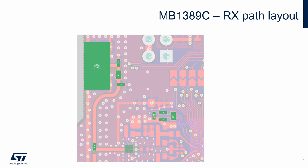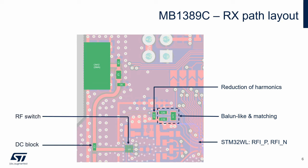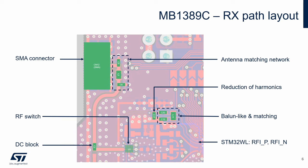The PCB layout of the receiver path looks like this. We can see the differential inputs of the receiver and differential transmission line, balun-like and matching network, the capacitor which can attenuate coupled harmonics from the transmitter part, RF switch, DC block, antenna matching network, and the SMA connector. The impedance of the single-ended RF line is 50 Ohms, and the impedance of the differential RF line is 100 Ohms. The length of the differential RF line has an impact on the balun-like components — if the length is different, the values may need to be fine-tuned.